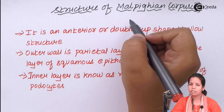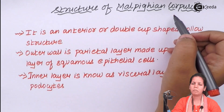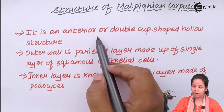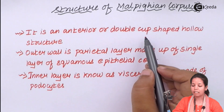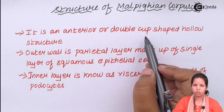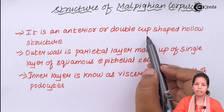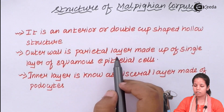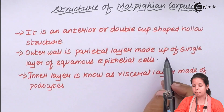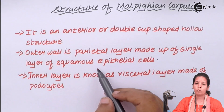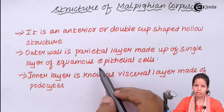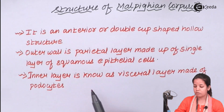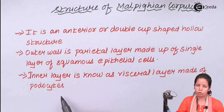If you see the structure of Malpighian corpuscles, or simply Bowman's capsule, it is a double cup-shaped hollow structure. The outer periphery is termed as the parietal layer, made up of single squamous epithelial cells which are ellipsoid, have less spaces in them, and the nucleus is elongated. Whereas the inner layer is termed as the visceral layer and is made up of podocyte cells.